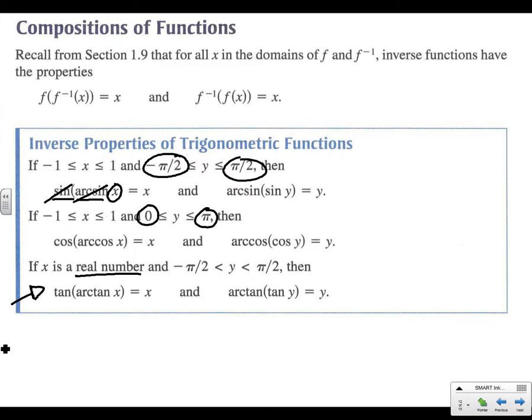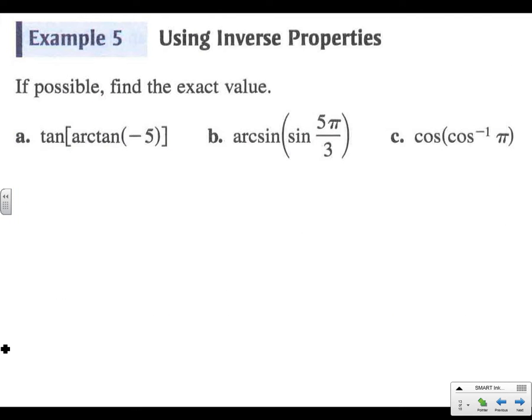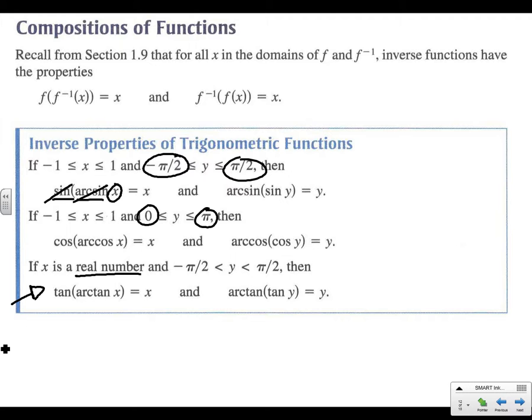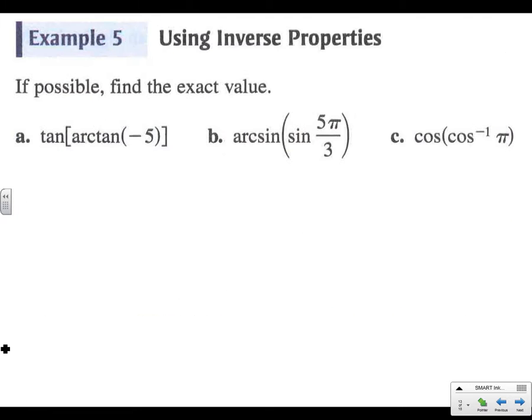And as long as y is in between negative π/2 and π/2, then we're going to be okay. In this problem where it goes tan and then arctan, we're going to look at this first one. And so on here, we need x to be any real number. So that's fine. It is. Tan and arctan cancel out and our answer is negative 5.